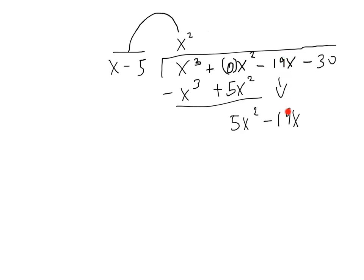Then we drag our -19x down. As usual, we're at the end of the loop, so we go right back to the start. We divide x into 5x², which gives us 5x. Again, we multiply that 5x by x - 5, which gives us 5x² - 25x. We're going to have to change the signs. The 5x² cancels with the 5x², gives us nothing. Add these two, we get 6x.